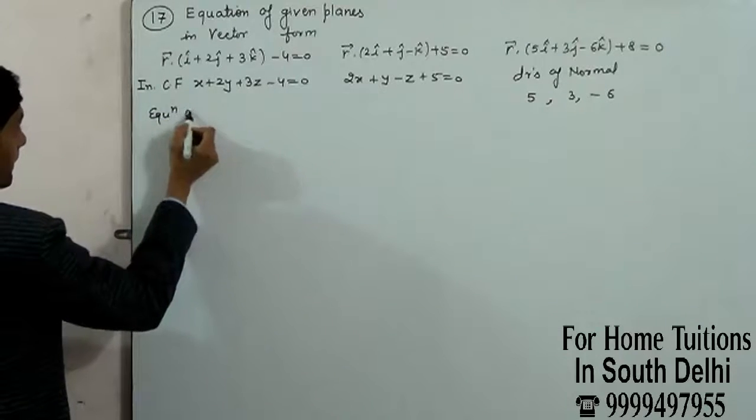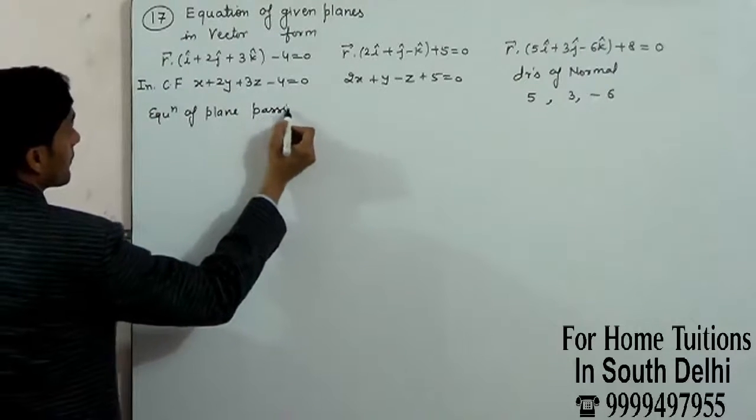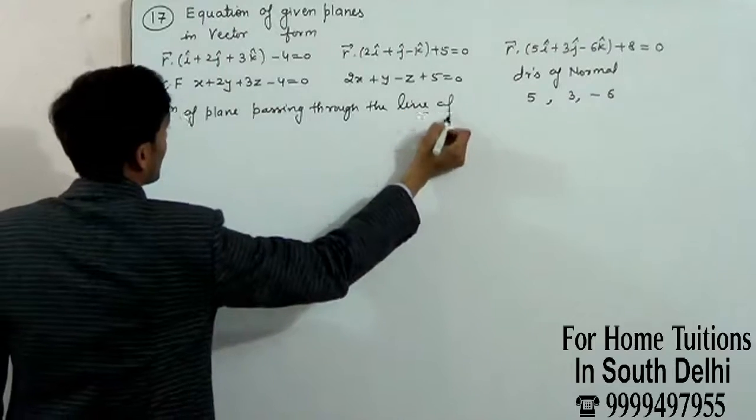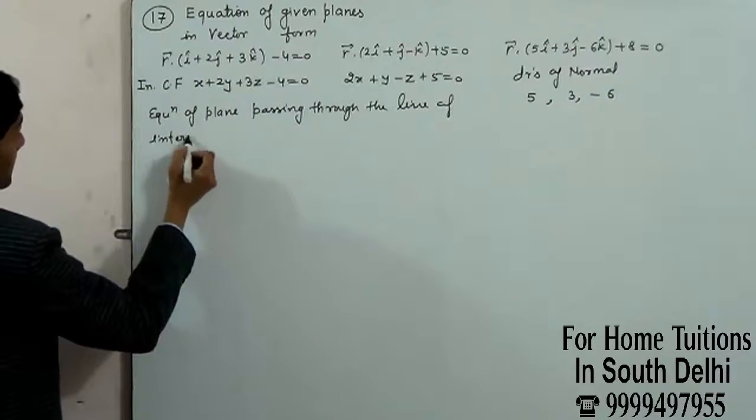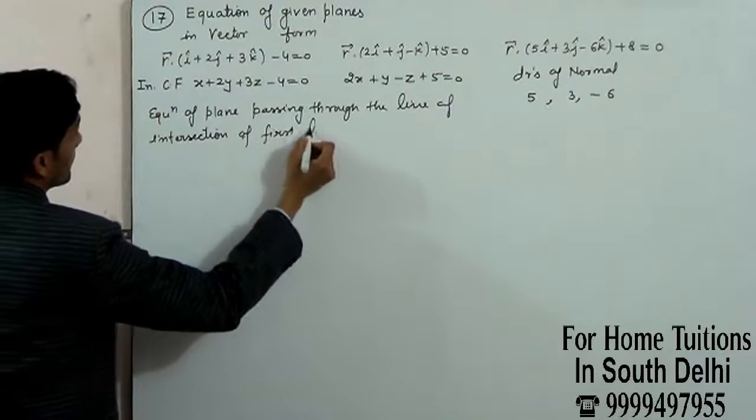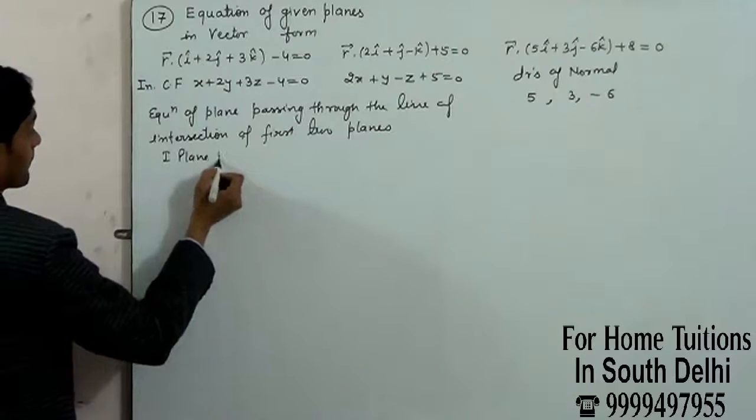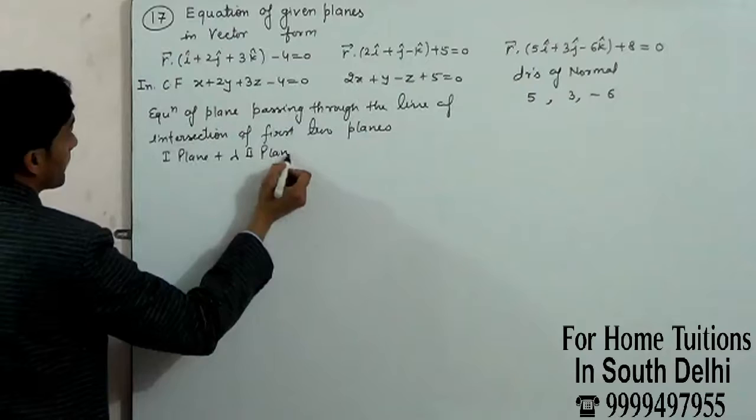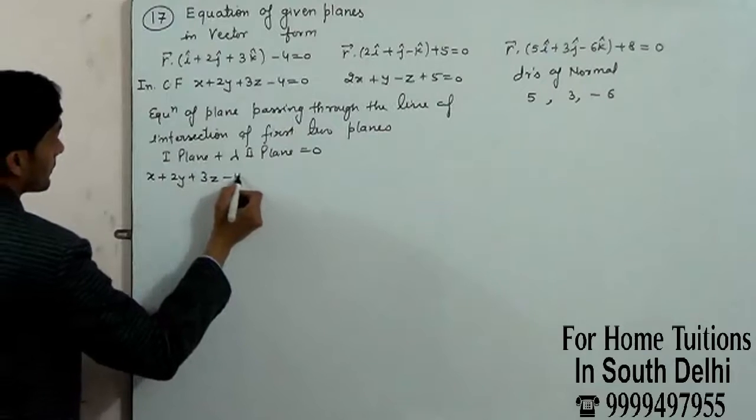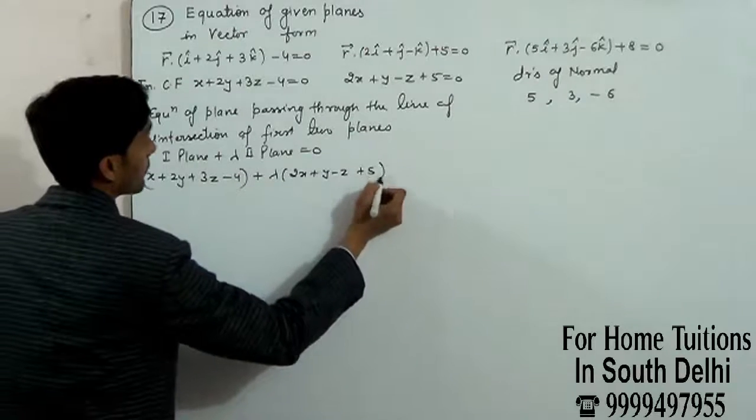Equation of plane passing through the line of intersection of first two planes: first plane plus lambda times second plane equals zero. X plus 2Y plus 3Z minus 4 plus lambda times (2X plus Y minus Z plus 5) equals 0.